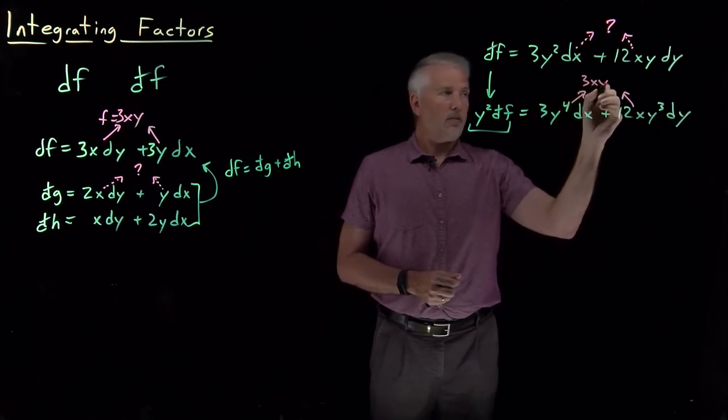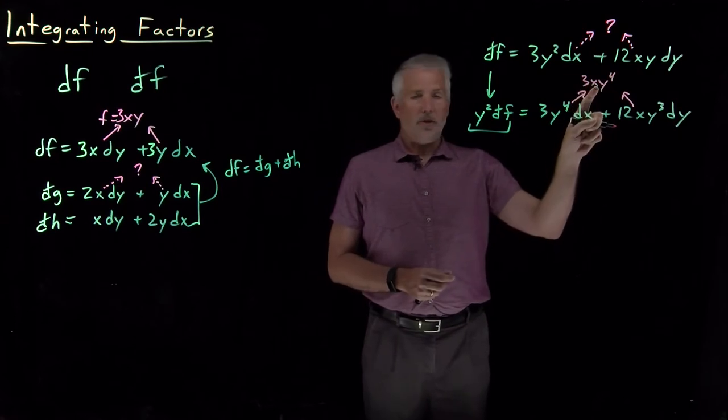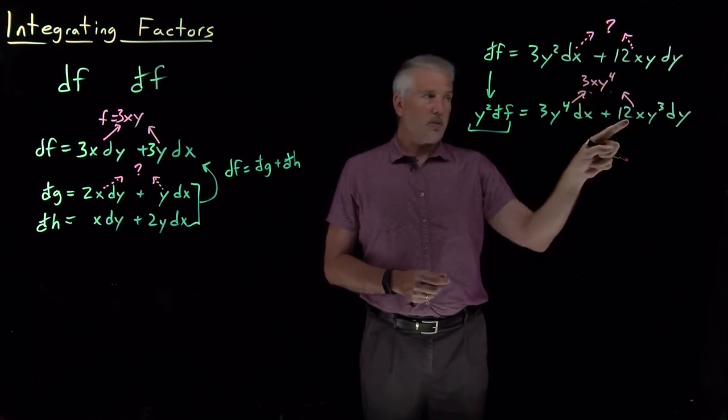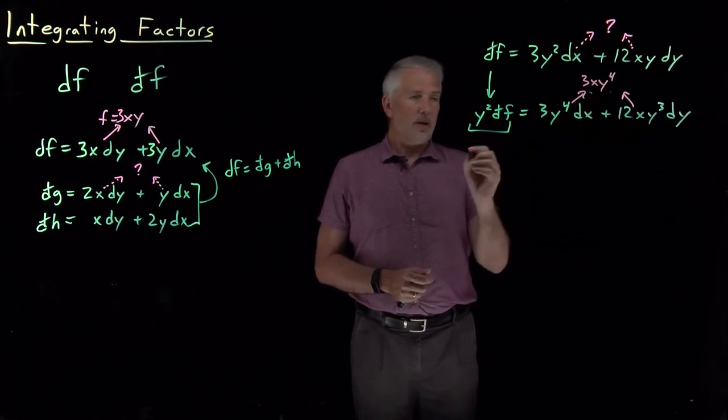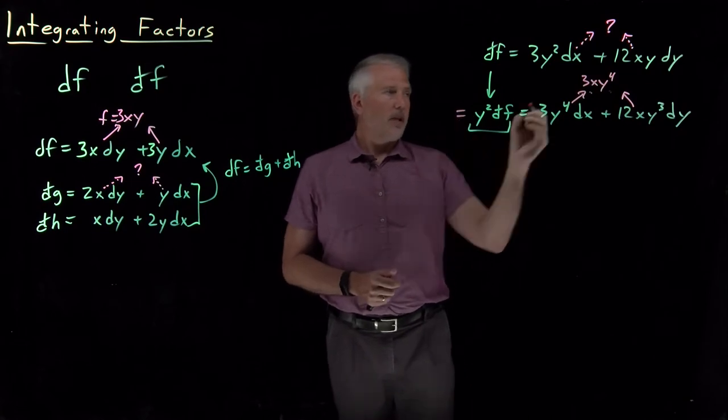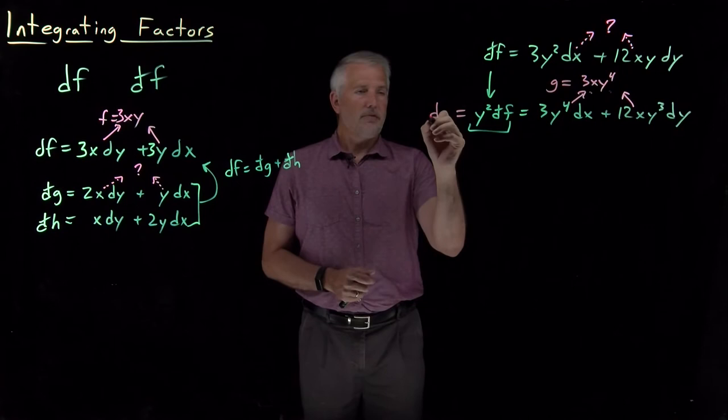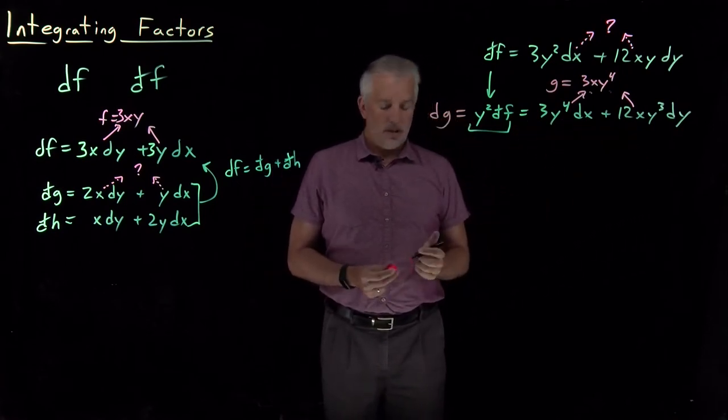If I take the x derivative of some function and I get 3y to the 4th, that function would have been 3xy to the 4th. And that same function, 3xy to the 4th, if I take the y derivative, 4 times 3 is 12, reducing the power of y by 1 gives me 12xy cubed. So this quantity, there is some function, let's call it g, whose exact differential is 3y to the 4th dx and 12xy cubed dy.